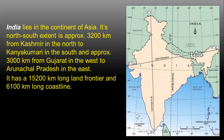Its north-south extent is approximately 3,200 kilometers — as you can see in the picture, from Kashmir in the north to Kanyakumari in the south — and approximately 3,000 kilometers from Gujarat in the west to Arunachal Pradesh in the east.